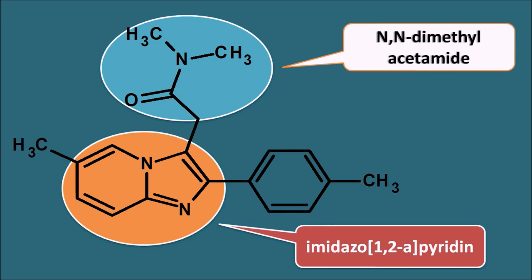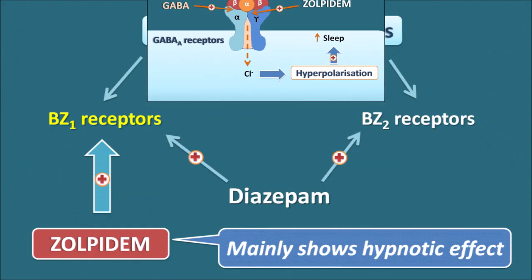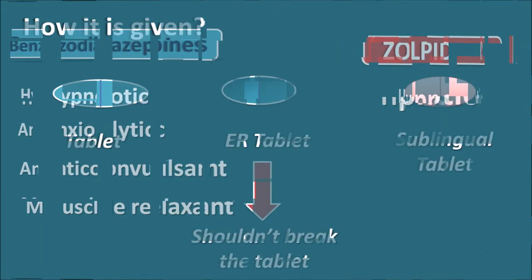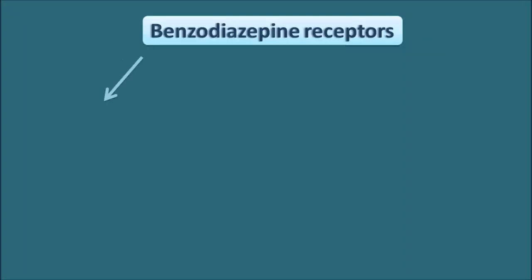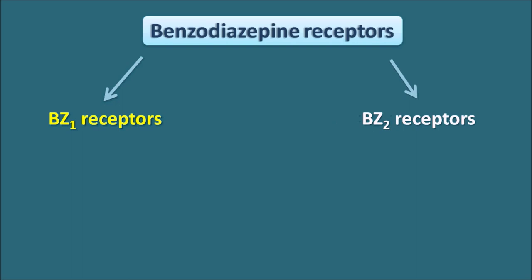In this video, let us see how Zolpidem can act like the benzodiazepines and what the differences are between them. Benzodiazepine receptors can be classified as benzodiazepine-1 receptors and benzodiazepine-2 receptors based on the subunits they are coupled with. GABA-A receptors are composed of different subunits such as alpha, beta, and gamma, and the alpha subunit can be further divided into alpha-1 to alpha-5.